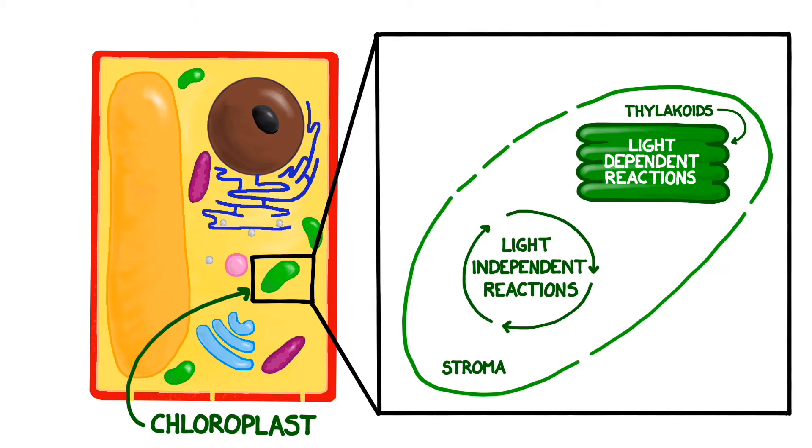The inner compartment consists of stacks of pigment-filled discs called thylakoids. The first part of photosynthesis, the light reactions, occurs here. The Calvin cycle, the second part of photosynthesis, takes place in the fluid-filled outer compartment, which is known as the stroma.